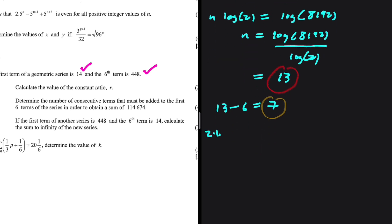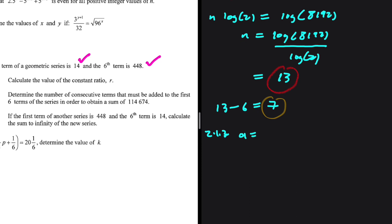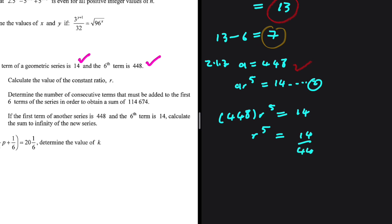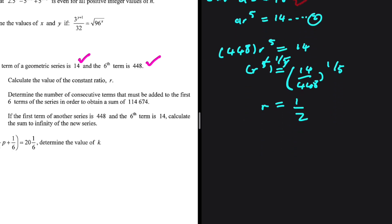Now for 2.1.3. If the first term of another series is A equals 448 and the sixth term AR to the power of 5 equals 14, we need to calculate the sum to infinity. Substituting A into the equation: 448 R to the power of 5 equals 14, so R to the power of 5 equals 14 divided by 448. Taking this to the power of 1/5, the 5s cancel out and R equals 1/2.